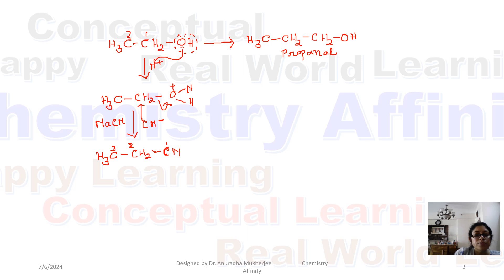Now the cyano group, if we perform acidic hydrolysis, converts to carboxylic acid. That means we are getting propanoic acid.